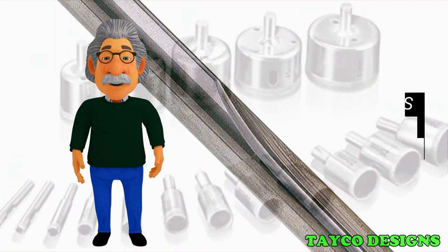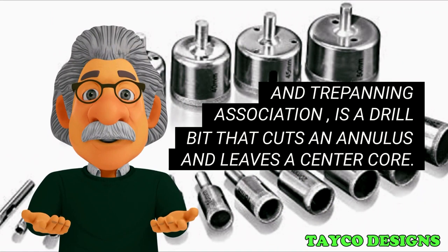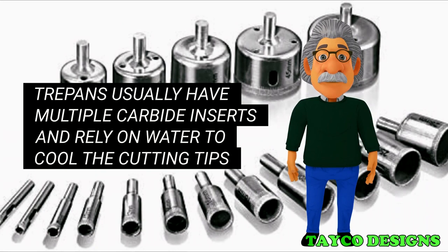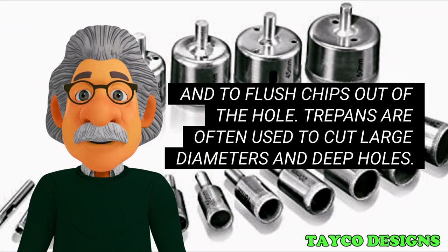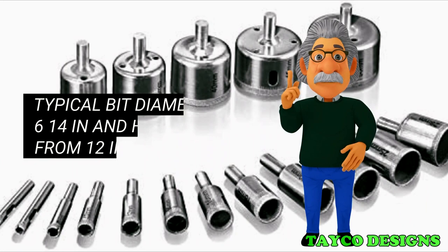Trepan. A trepan, sometimes called a BTA drill bit after the Boring and Trepanning Association, is a drill bit that cuts an annulus and leaves a center core. Trepans usually have multiple carbide inserts and rely on water to cool the cutting tips and to flush chips out of the hole. Trepans are often used to cut large diameters and deep holes. Typical bit diameters are 6-14 inches and hole depth from 12 inches up to 71 feet.